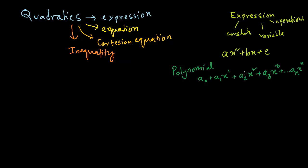You might not recognize this easily, because the standard form is writing the highest power in front. The quadratic polynomial written in standard form would be: c is a₀, plus bx to the power 1 is a₁, plus ax to the power 2 where a₂ equals a. In polynomials, the exponent of the variable x has to be positive — x to the power 1, 2, 3, and so on — but the constant can be positive or negative.